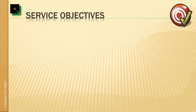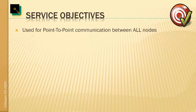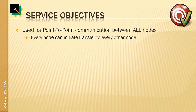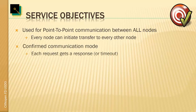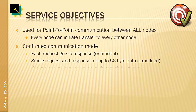CANopen FD supports a number of communication methods and protocols. The one we are looking at here is the universal service data object, or in short USDO. The objectives for this service are to provide a point-to-point communication between all nodes. In regular CANopen, the SDO service is only initiated by one device - the manager. The main difference in CANopen FD is that now every node can initiate such a point-to-point communication.